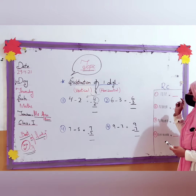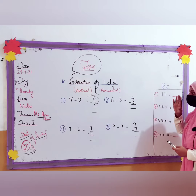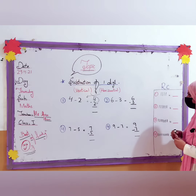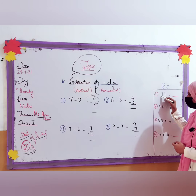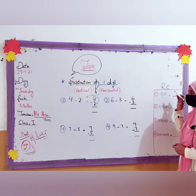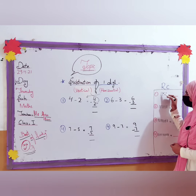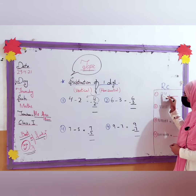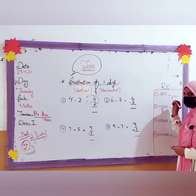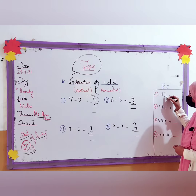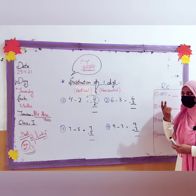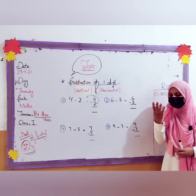You have to minus 2 from 4. So let's count with me how many lines are here: 1, 2, 3, 4. You have to minus 2 from here — 1 and then 2. We cross those out. Then count how many will remain: 1 and 2. Just 2 will remain.